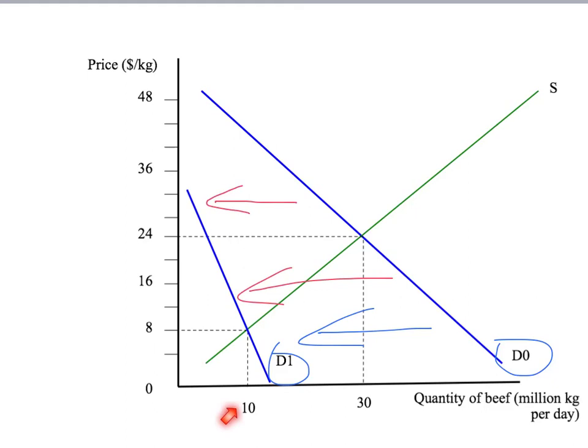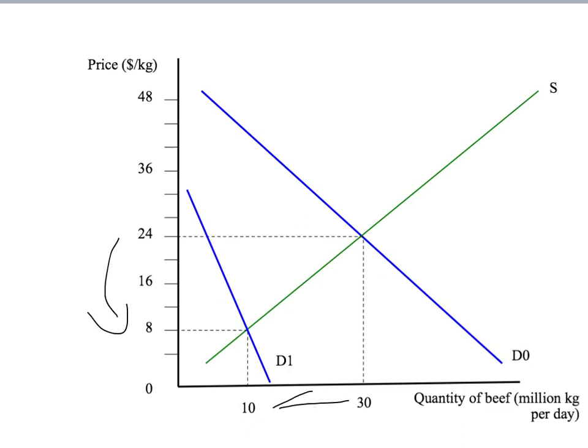So our prediction is that Oprah's comments on US talk show led to a big decrease in the price of beef, and a massive fall in the sales of beef. And that's exactly what happened in the United States after her comments. So what was the outcome of all of this? The beef farmers took Oprah to court, and they lost. They also lost an awful lot of money. They were selling beef a lot cheaper, and they were selling a lot less of it.